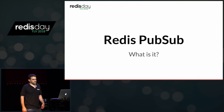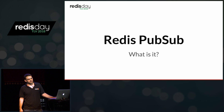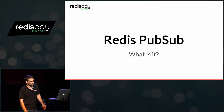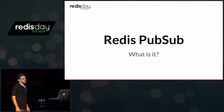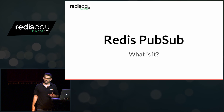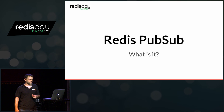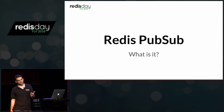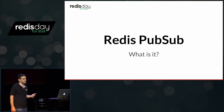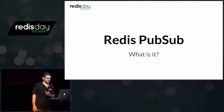So what is Redis PubSub? Redis PubSub is the Redis implementation of the publish-subscribe messaging pattern. The client can subscribe to some channels, the publisher can send messages to those channels, and if a subscriber is registered and listening to those channels, they will get that message through Redis.